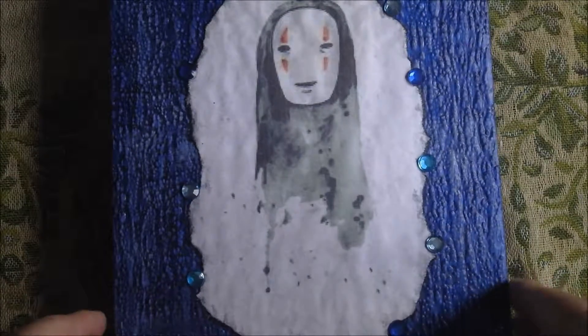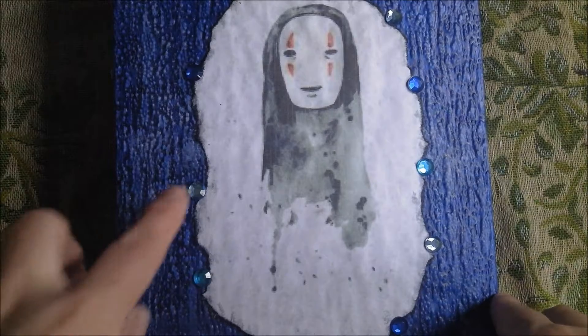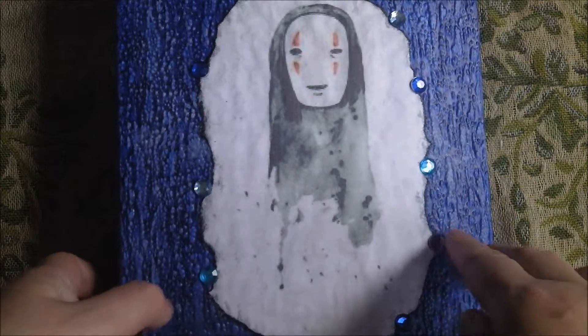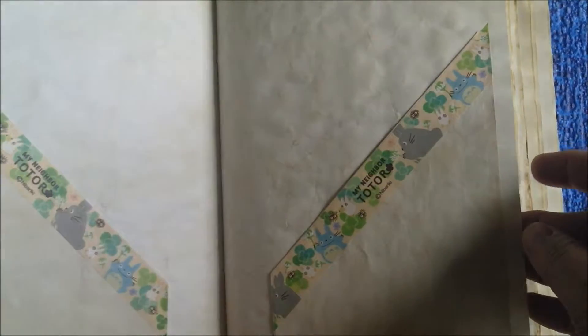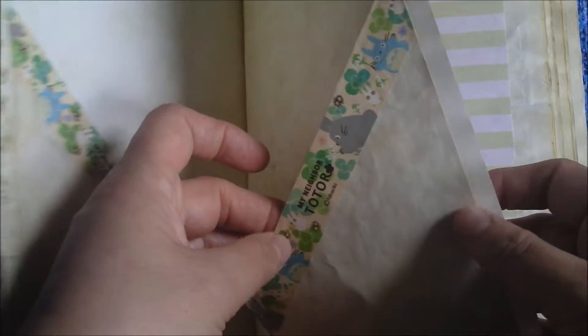This is my Studio Ghibli one. This is no face on the front and these are just little jewels. It's got little jewels on the side. It's just digital papers, like I say they're all digital papers. And then little pockets. This is some of the last of my neighbor Totoro washi tape that I had left on it.